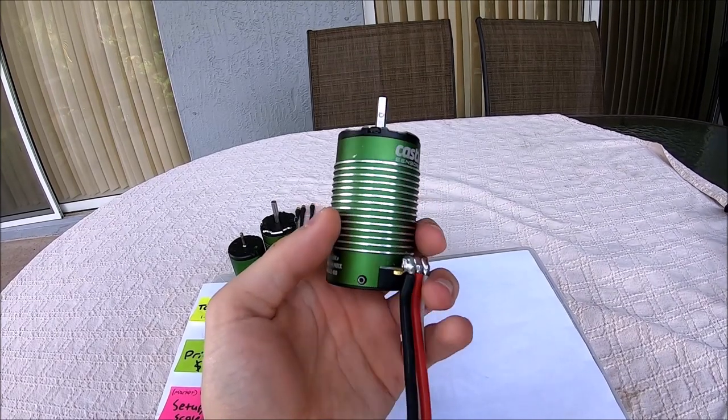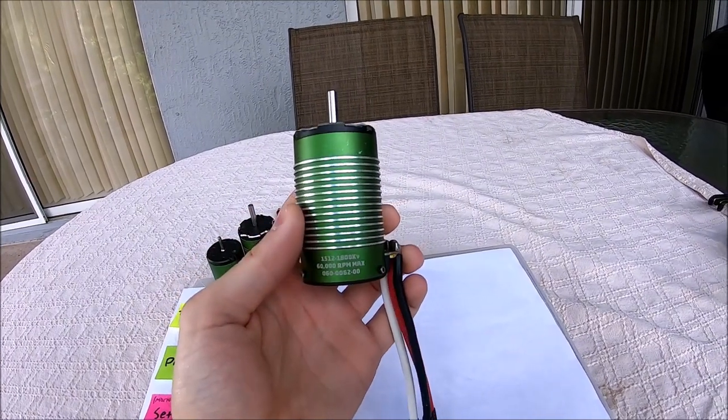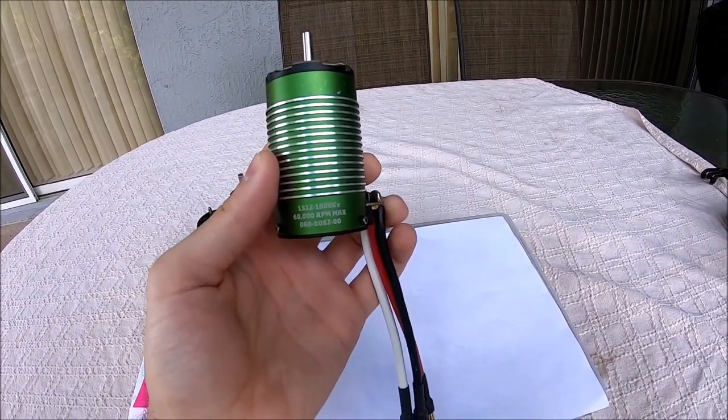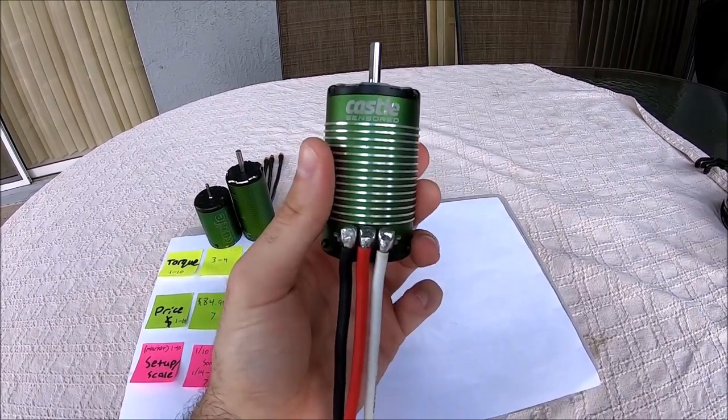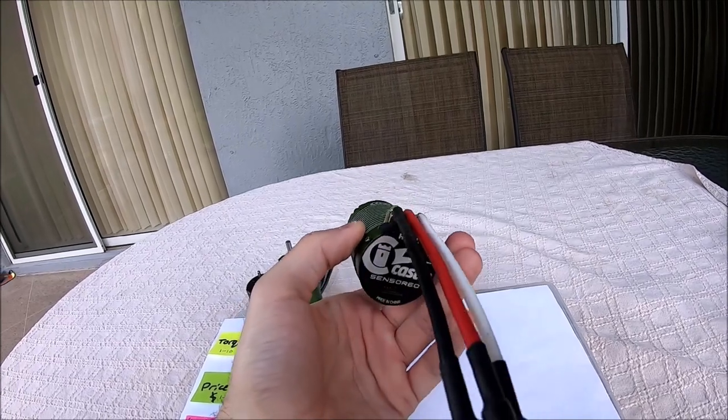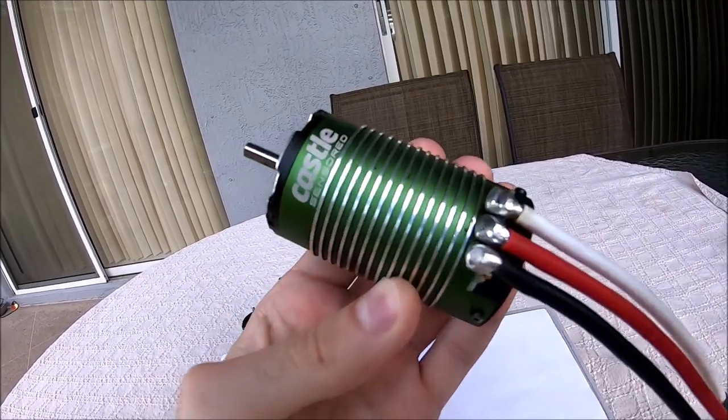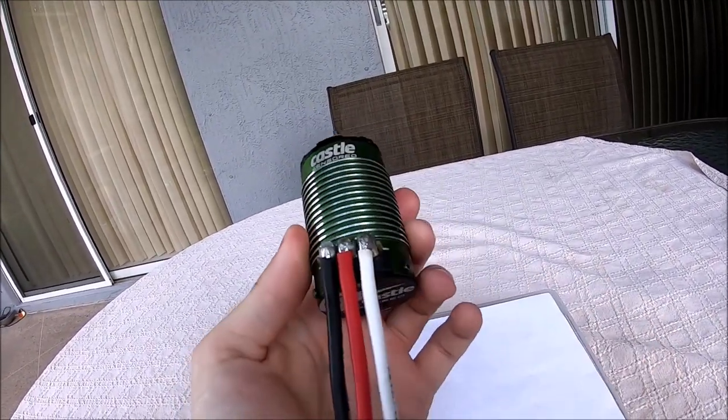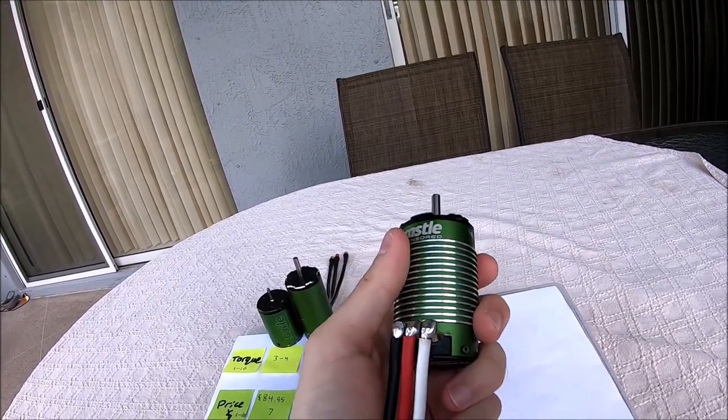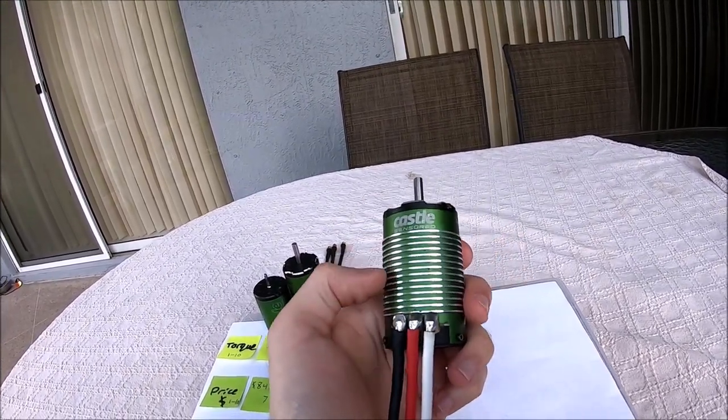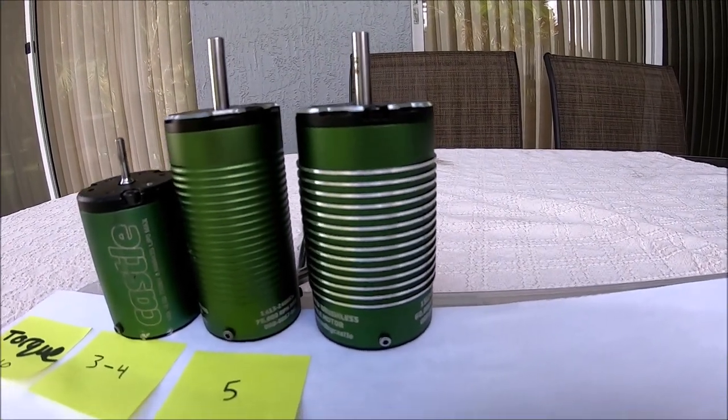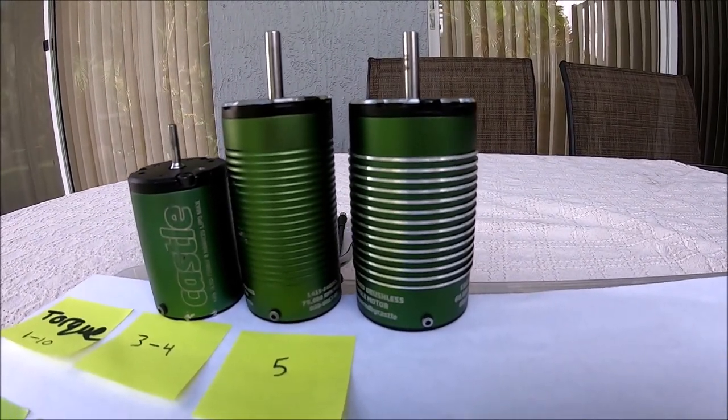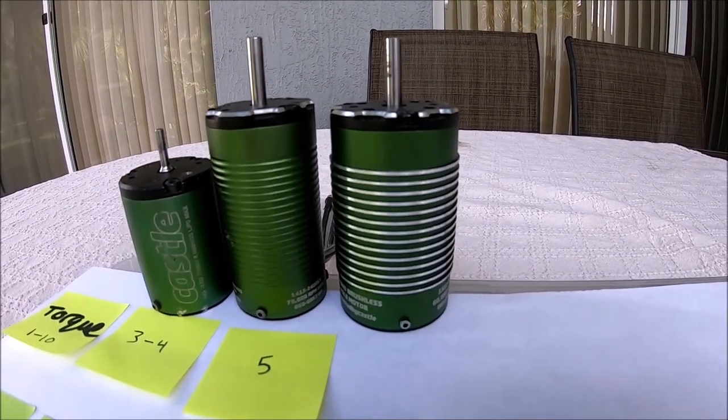We're starting to get kind of chunky now. This is the 1800 KV 1512, so this is the beginning of the 1/8 scale motor size. This motor comes sensored capable, waterproof, solder tabs on top, amazing quality, and super nice heat sinks to dissipate heat. A size comparison - the 1512 is a little bit shorter than the 1415 but it's still going to pack a lot of punch.